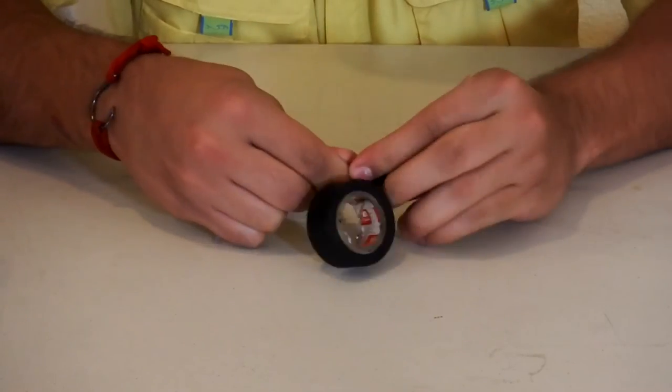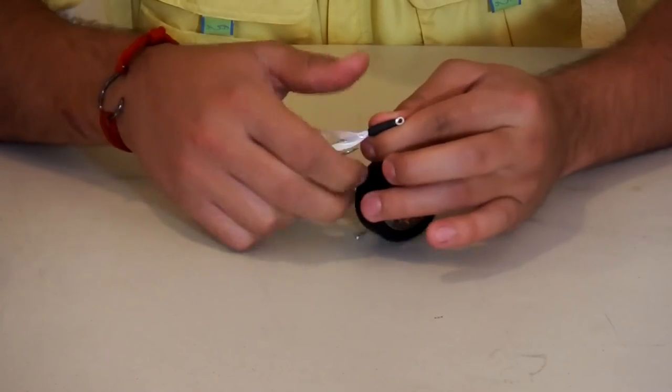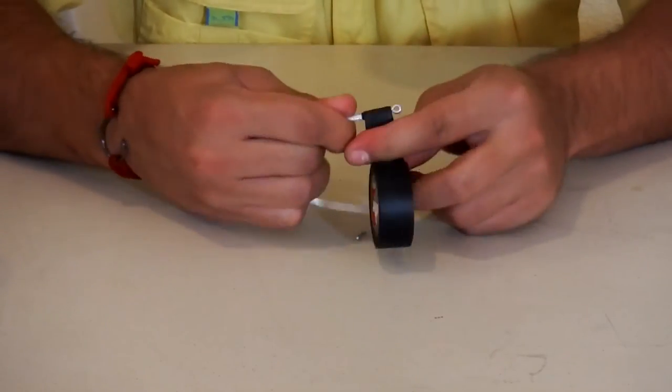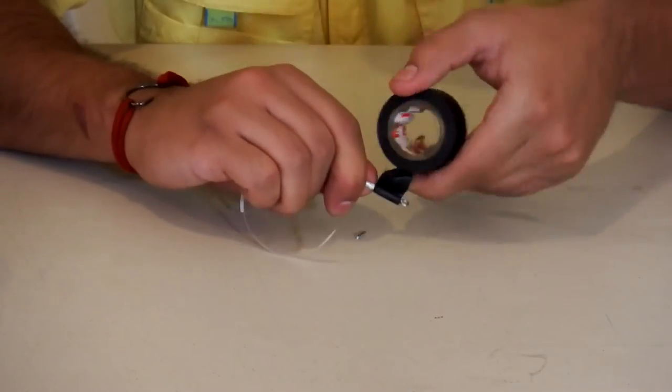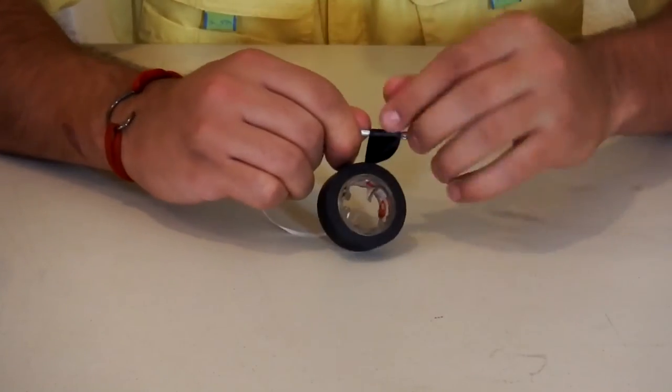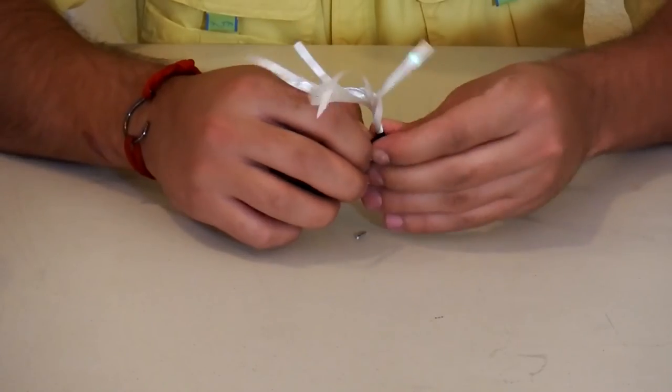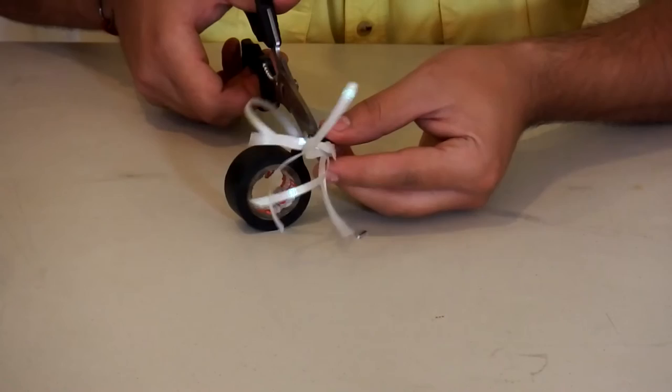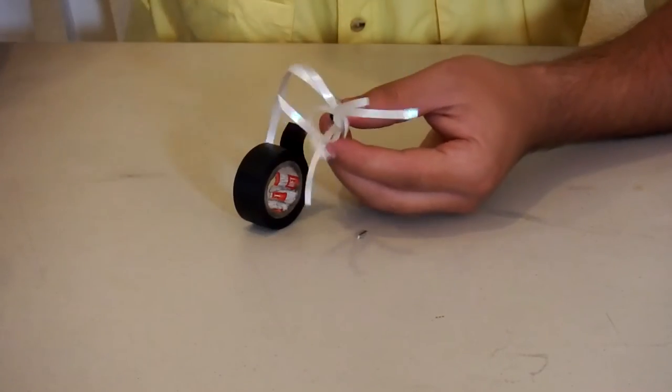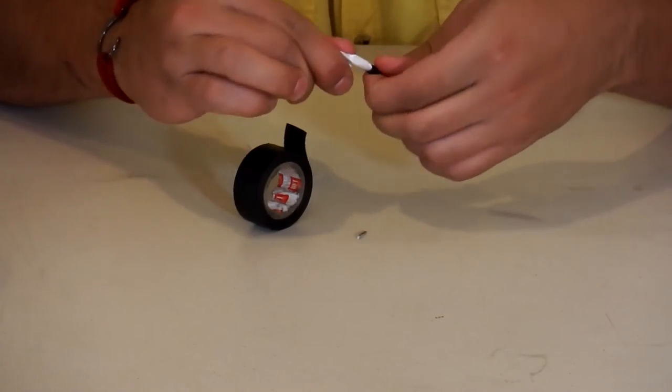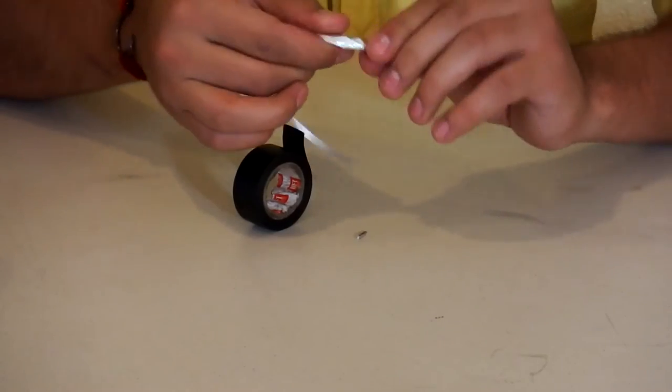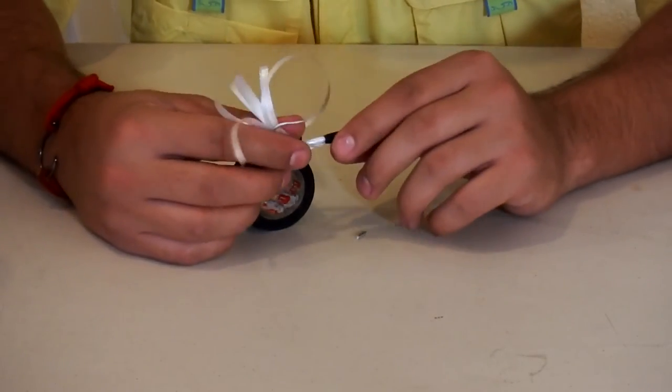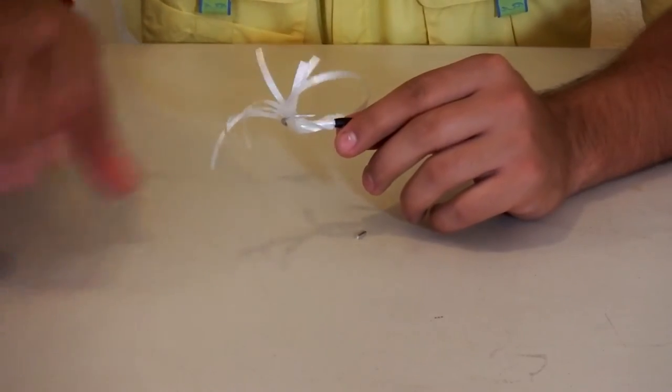Always make sure that the electrical tape is being put on nice and tightly to avoid spin. Alrighty, once we have that, we go ahead and cut this piece. The more wraps you do around the shank, the heavier it will be, and typically it will allow you to cast it a little bit further.